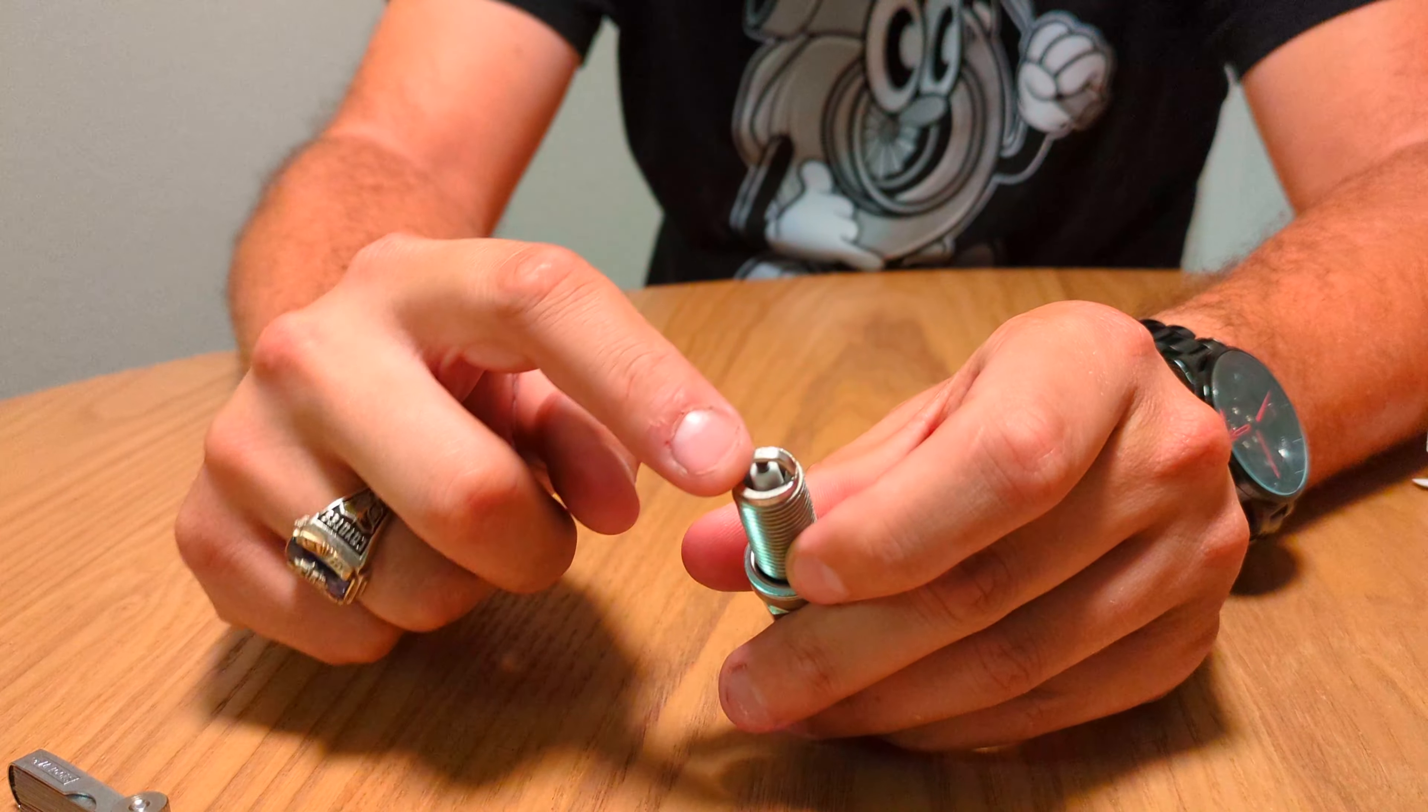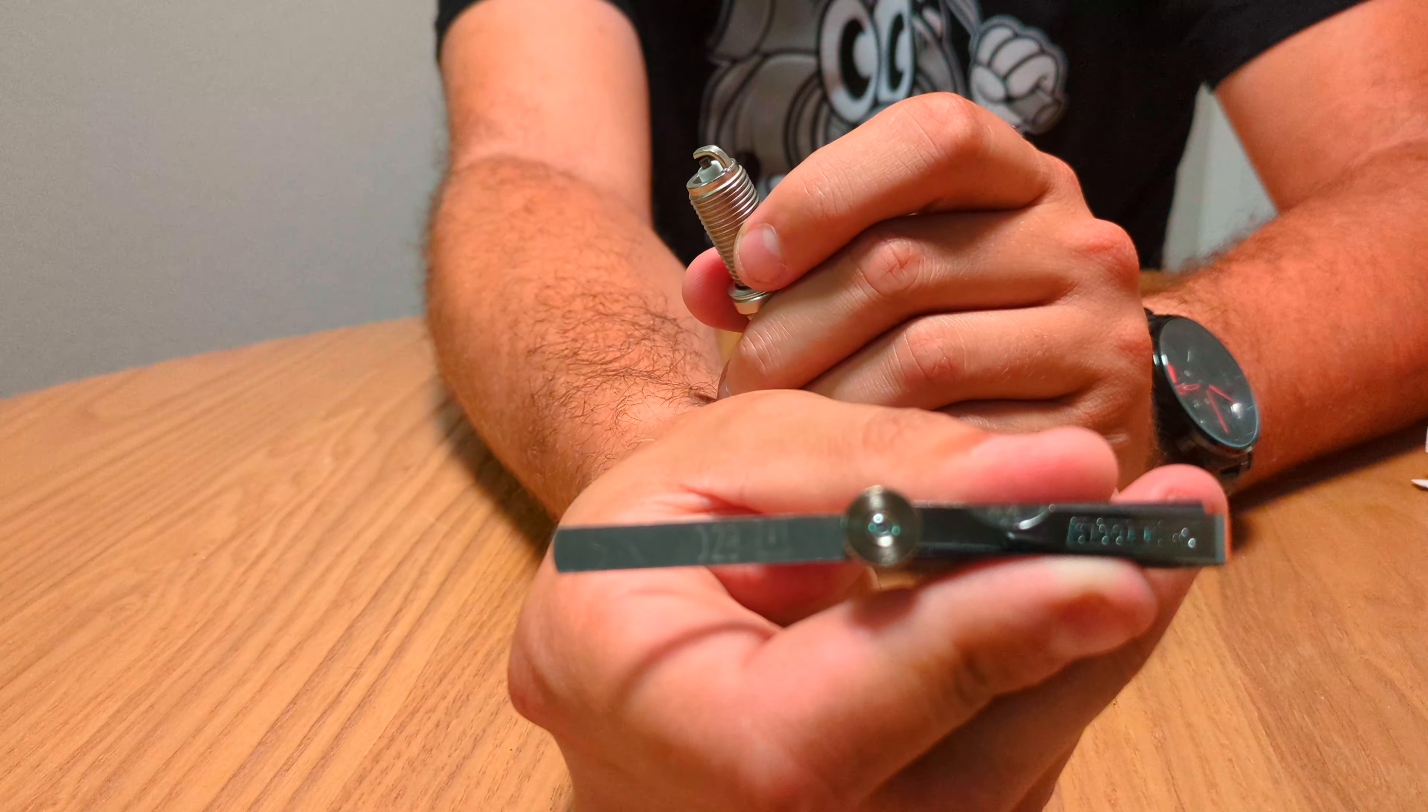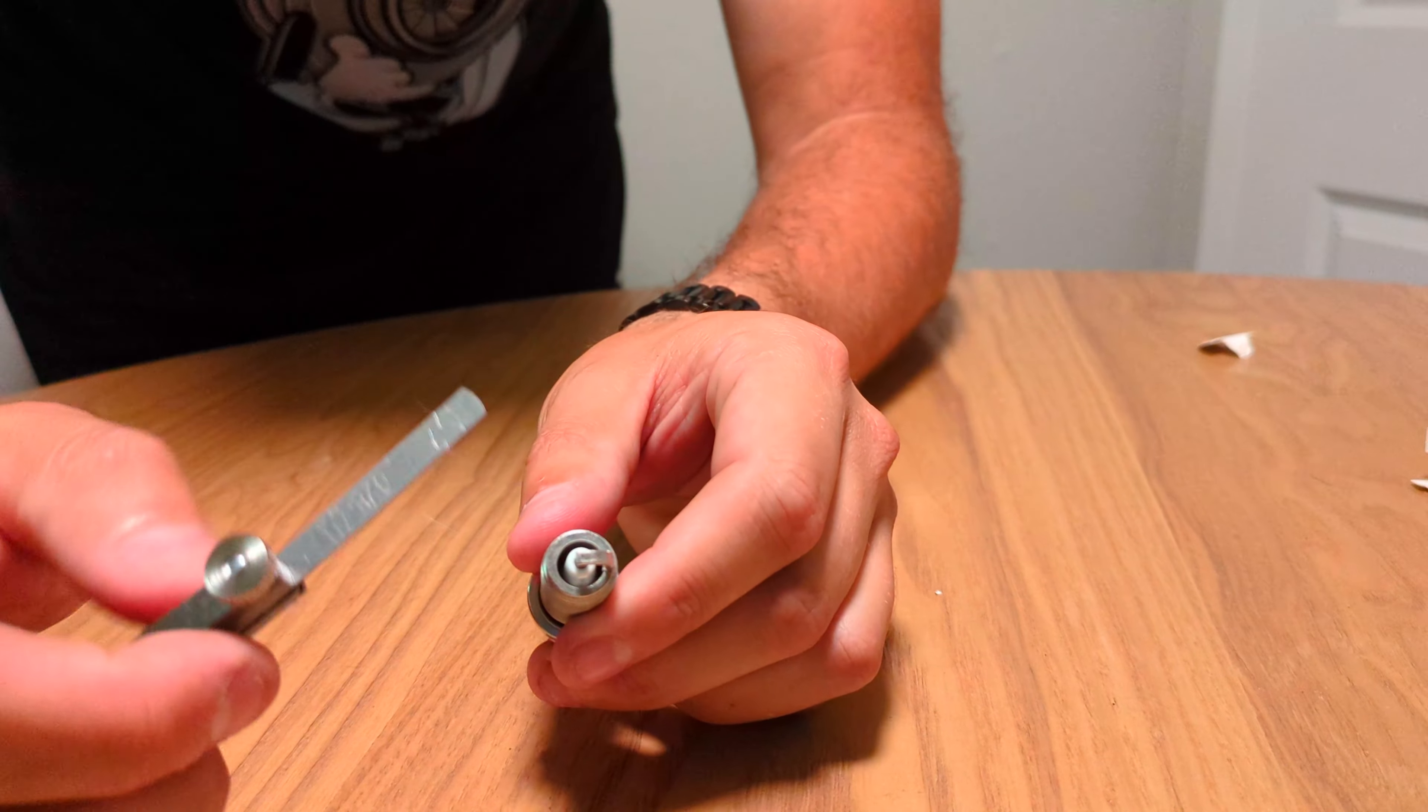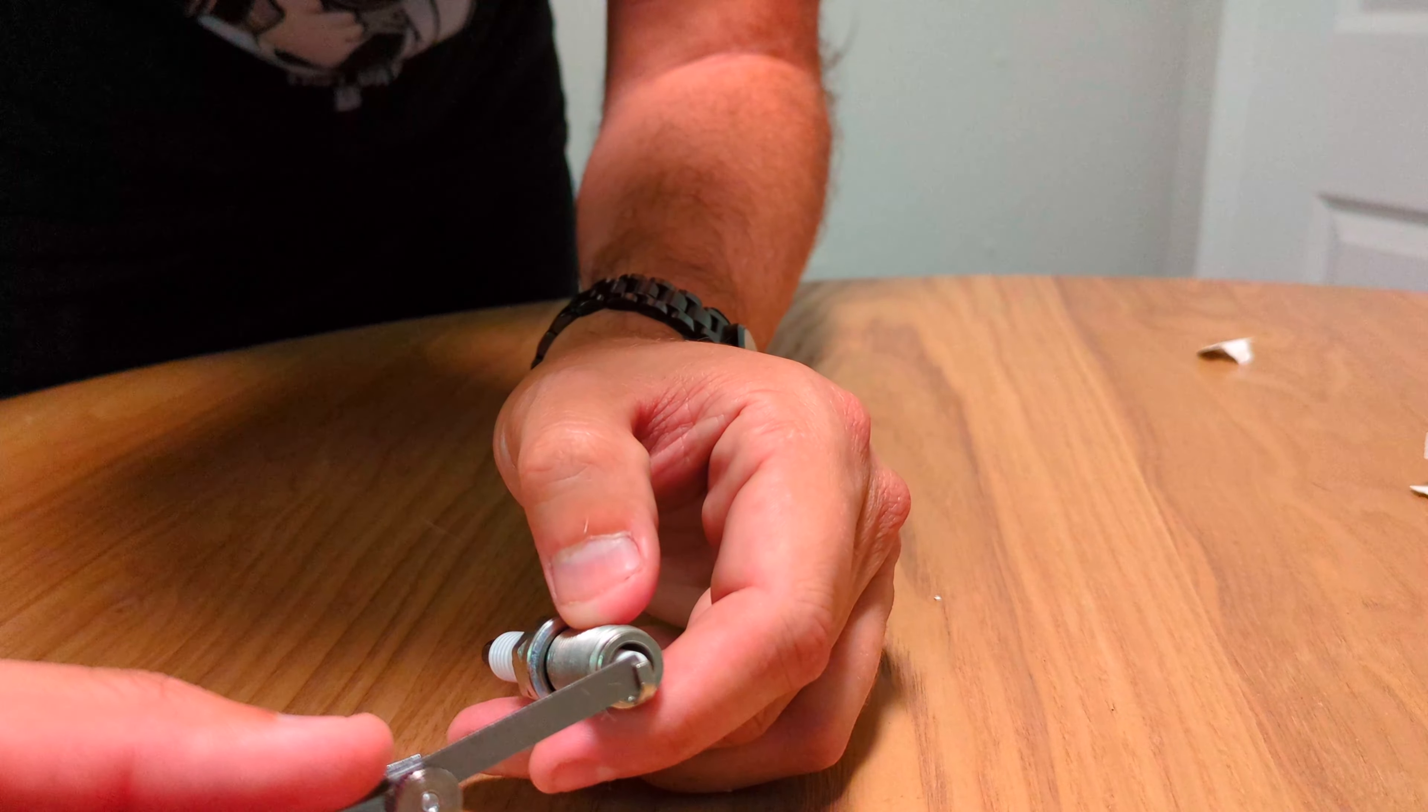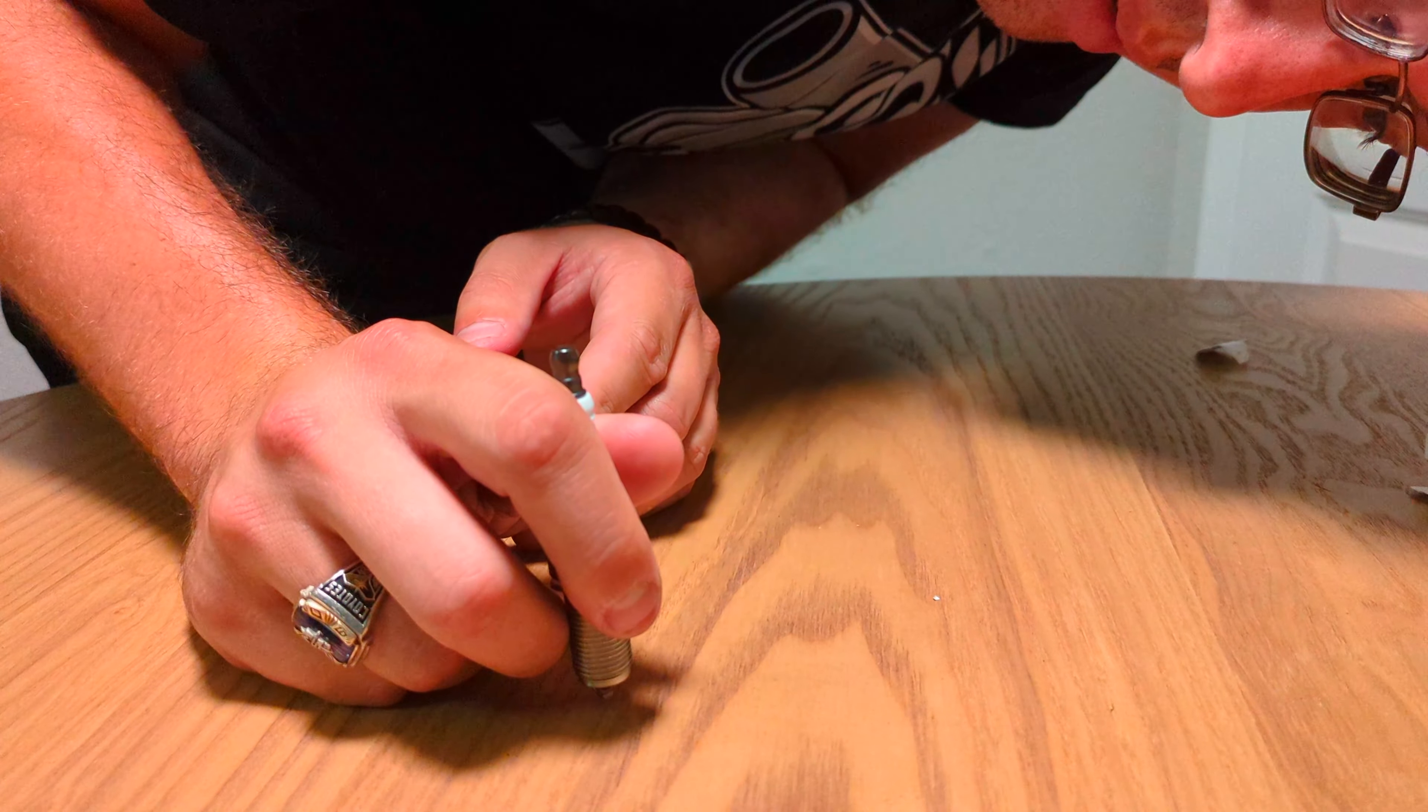That means you're more than likely going to have to make the gap smaller, shorter, in between the electrode tip and the ground strap. So my feeler gauge right here has one that is exactly that, 0.028. So I got the 0.028 feeler gauge right here. I put it in here - oh my gosh, it goes in there and there's no resistance. So that means I'm going to have to close the gap in between the ground strap and the electrode tip.